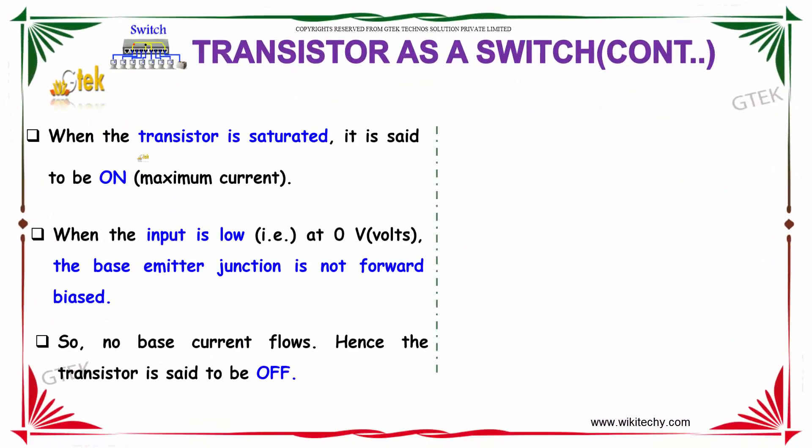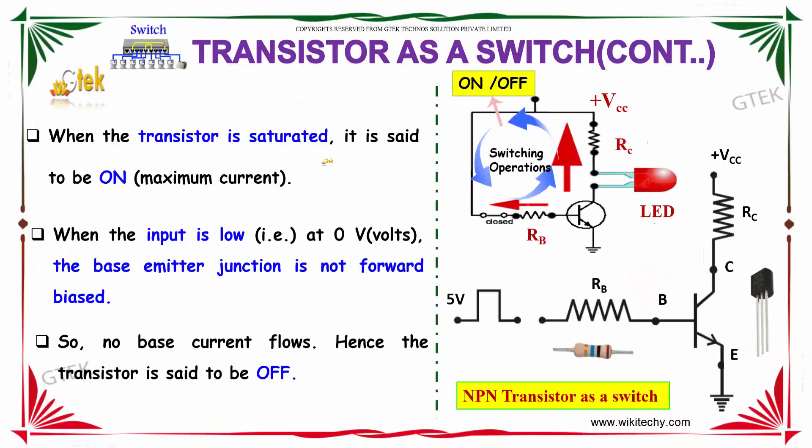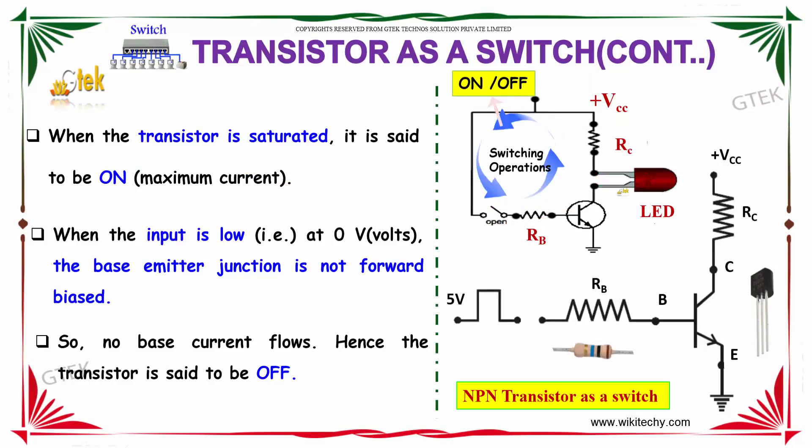When the transistor is saturated, it is said to be ON, and it will be having a maximum current.